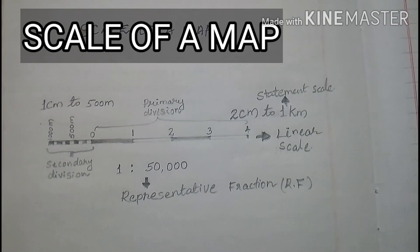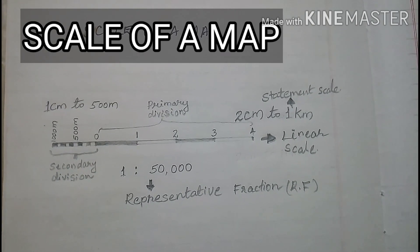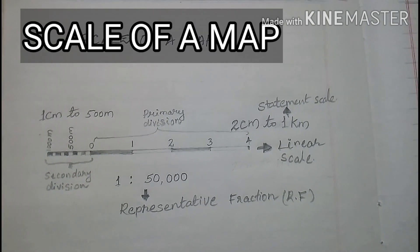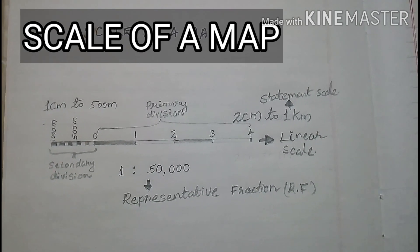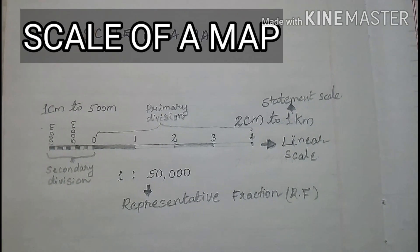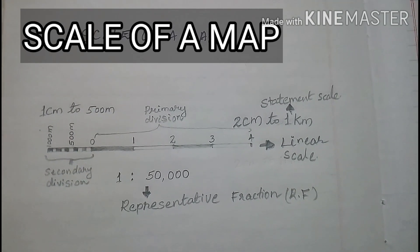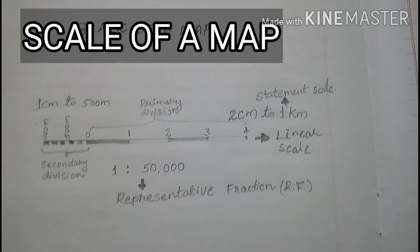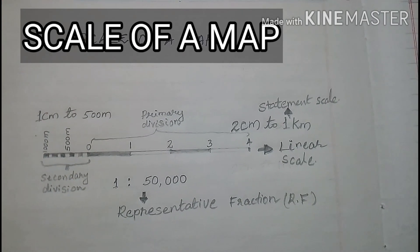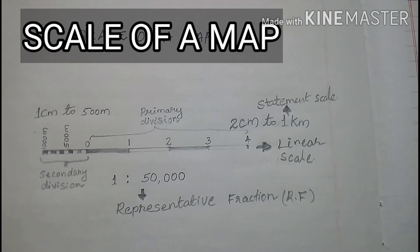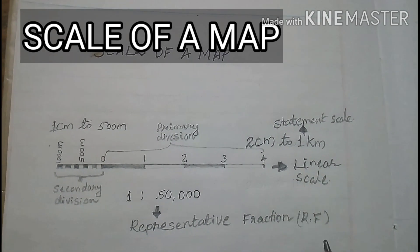We cannot represent the exact surface of the earth on a flat paper. That's why we show it as a relationship. The measurement of the length and breadth of the surface is taken, and after that it is represented on the map or a globe. For showing the relationship between the earth's surface distance and the distance on the map, it is represented with the help of three types of scales.